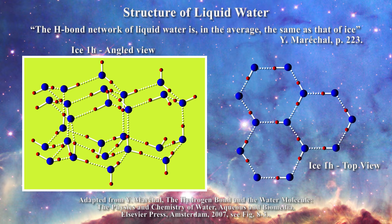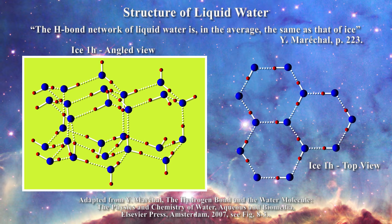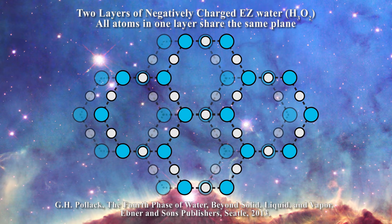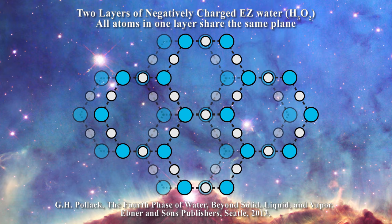It has also been argued that at the surface of water, the structure of water does indeed assume a hexagonal planar form called EZ water as you can see here. This forms the basis of the work by Professor Jerry Pollack and you can learn more about this structure in his book.